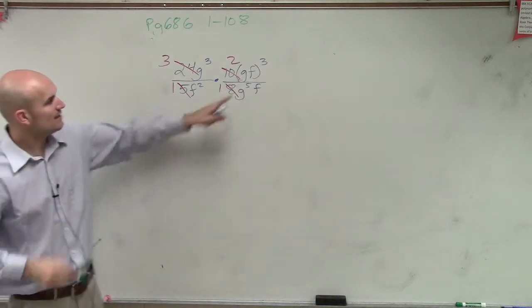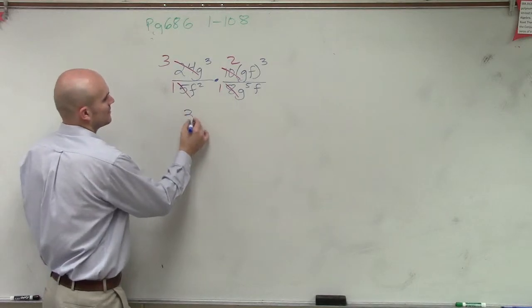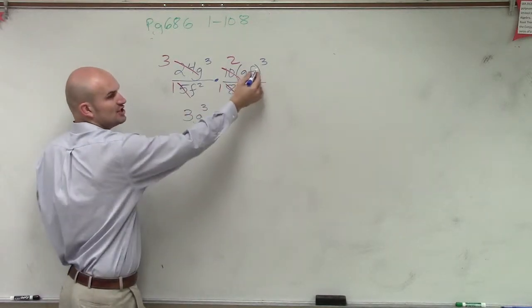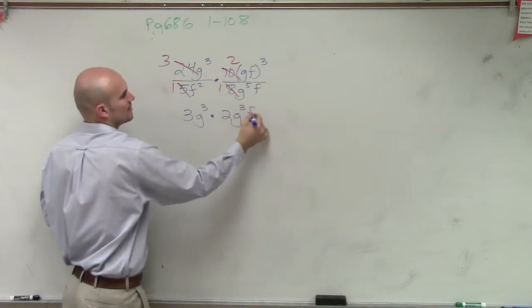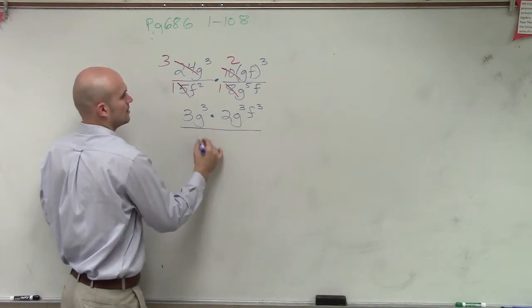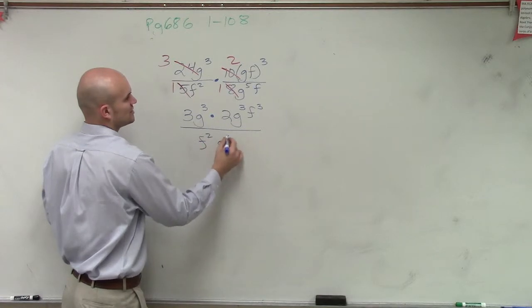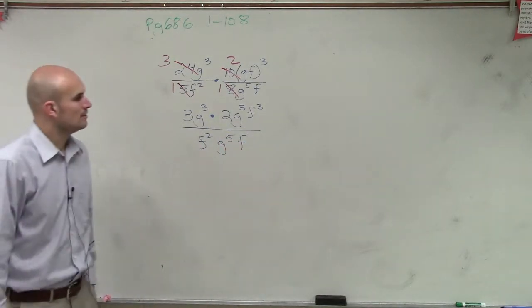So now, then this, so now we have this problem. So now we have 3g cubed times 2, and then gf cubed is going to be g cubed f cubed, right? Over f squared times g to the 5th times f. OK.